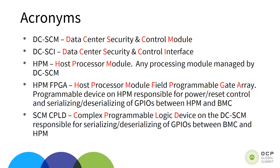Here are the acronyms. DCSEM refers to the Data Center Security and Control Module. DCSEI is the Data Center Security and Control Interface — the standardized connector interface of the SEM module. HPM is basically the motherboard or host processing module managed by the DCSEM. The HPM FPGA is the programmable logic device on the HPM, typically used for power and reset control, with the added function of serializing and deserializing the GPIOs between the HPM and the BMC. The SEM-CPLD is a programmable logic device on the SEM, responsible for serializing and deserializing the GPIOs between the HPM and the SEM, and also performs some management functions on the SEM.